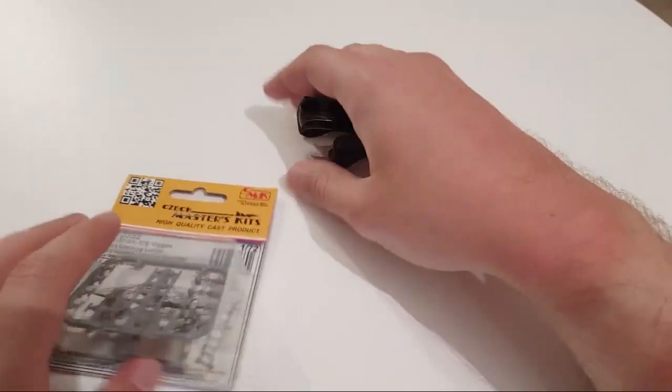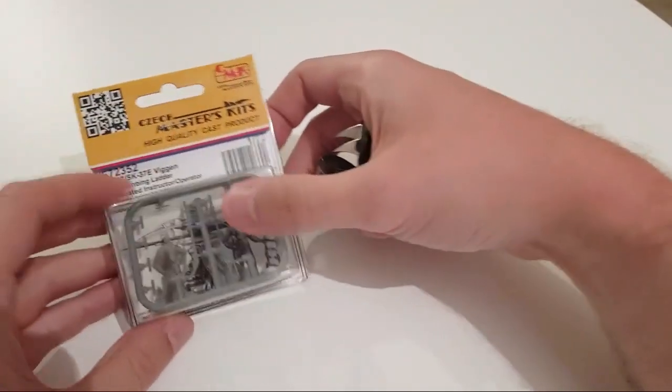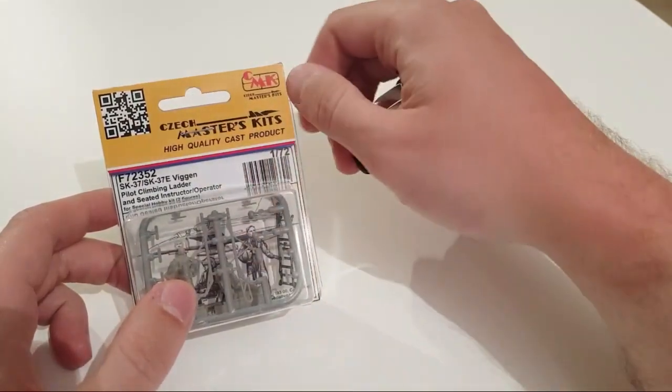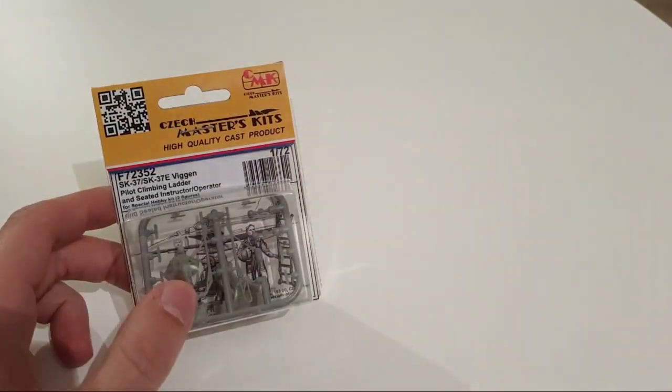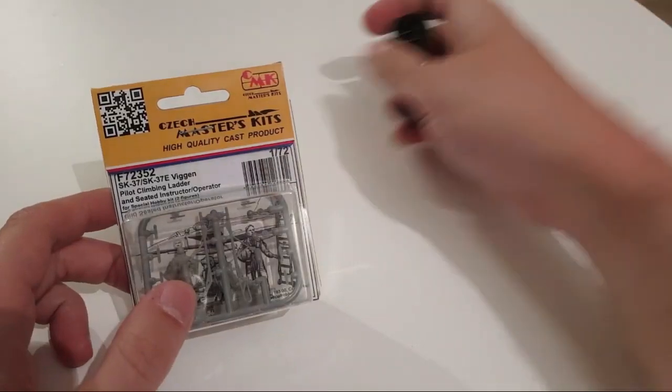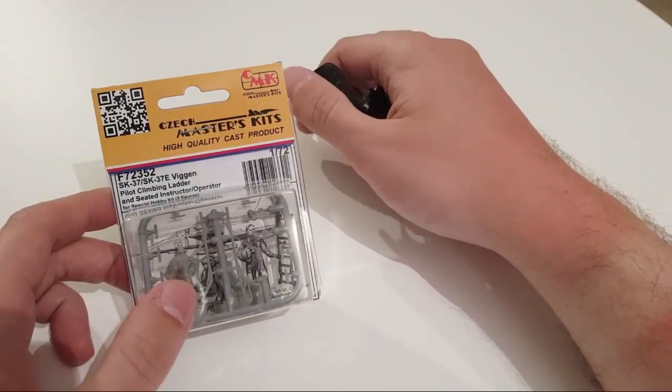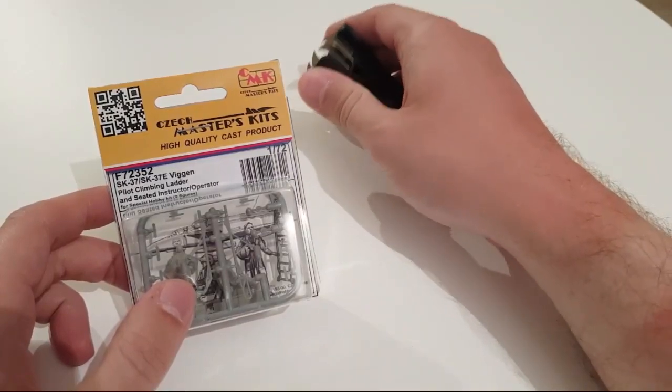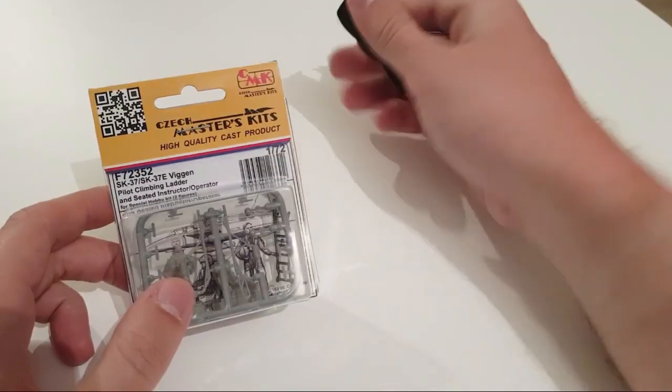It's not difficult to understand what we are going to review today. As you can see that's a CMK kit which includes figurines in 1:72 scale. It should be handy with the recent release from Special Hobby. As you remember it was a small scale Vegan and it was a Vegan duo pack, so it packed the single seater and the double seater.